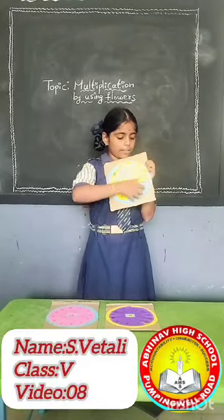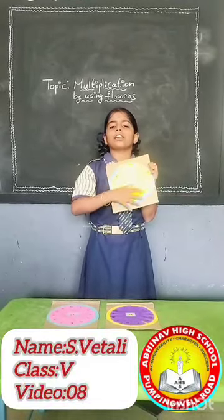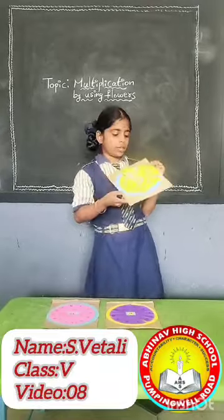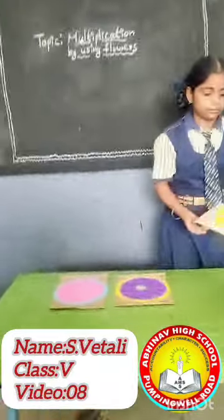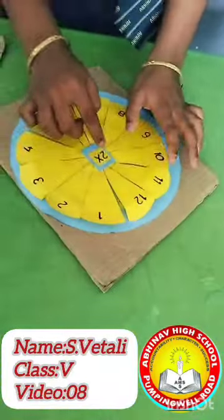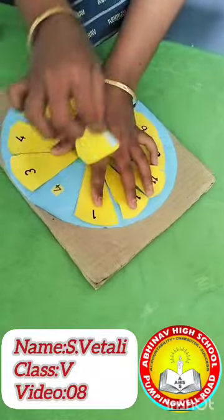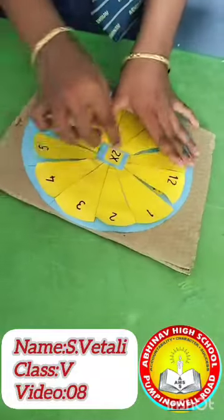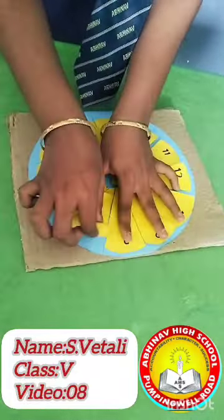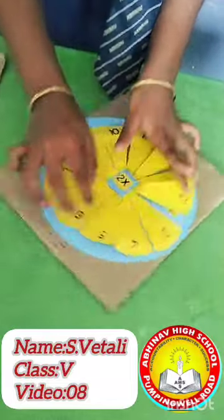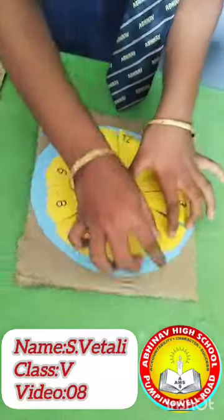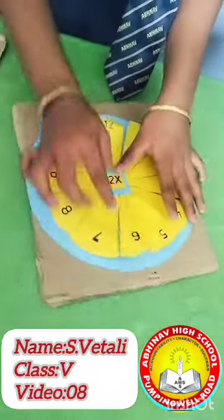Now take even numbers on the second blubber as we talk about the two times table. 2 ones are 2, 2 twos are 4, 2 threes are 6, 2 fours are 8, 2 fives are 10, 2 sixes are 12.